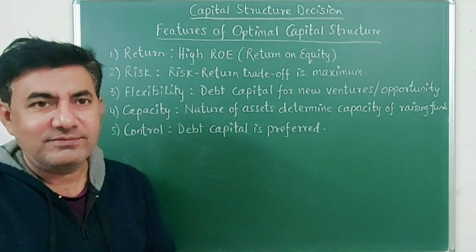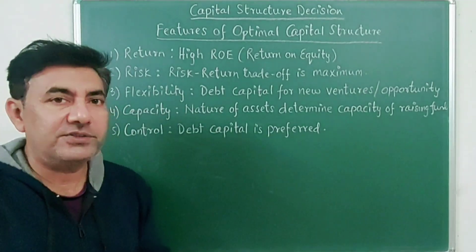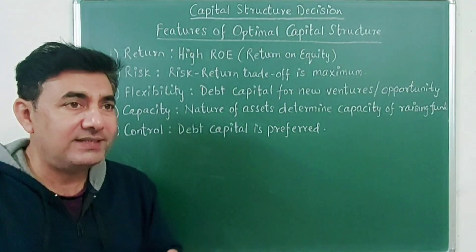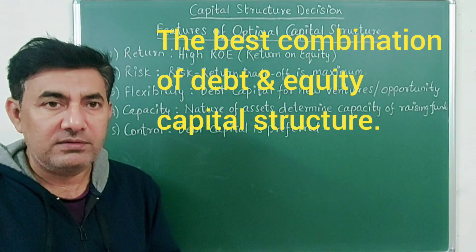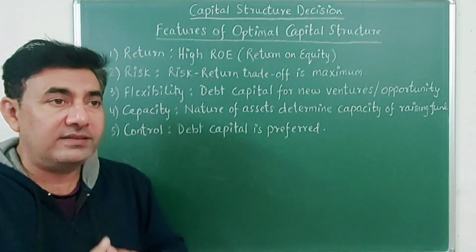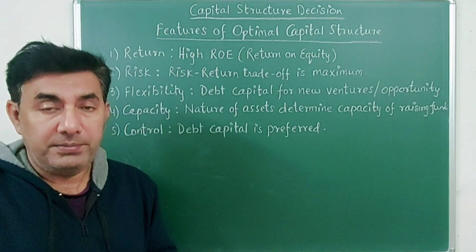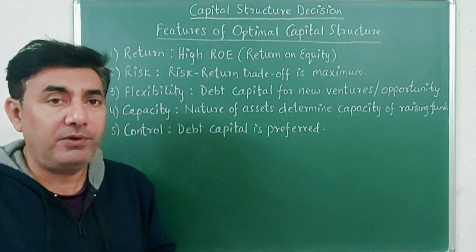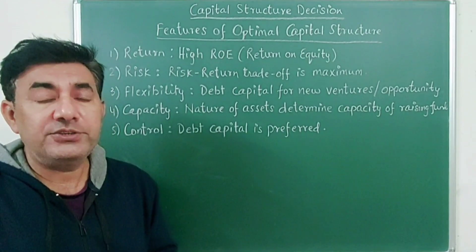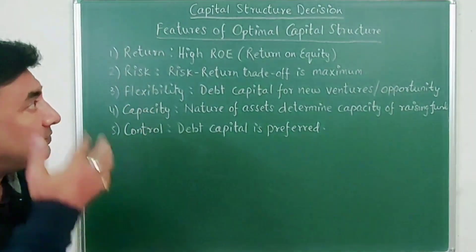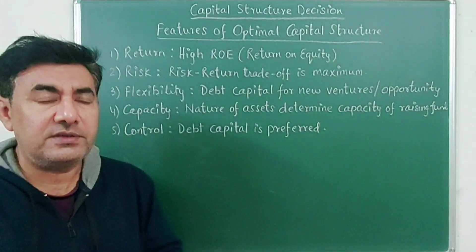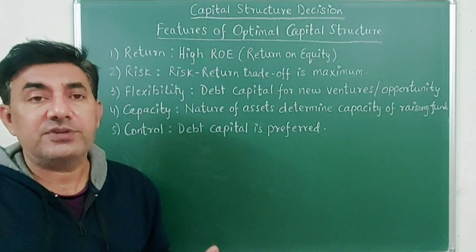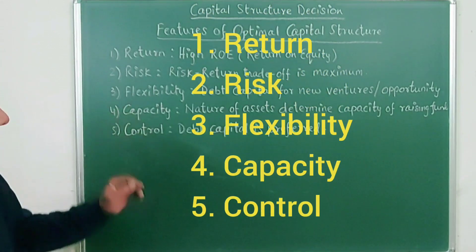The next topic is features of optimal capital structure. An optimal capital structure is the best mixture of debt and equity capital that enhances the returns and profitability of the company. There are five features a company considers to decide on the optimal capital structure: return, risk, flexibility, capacity, and control.